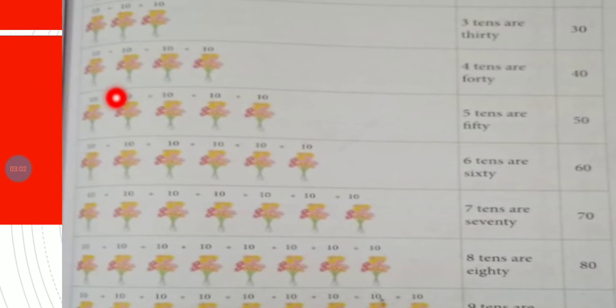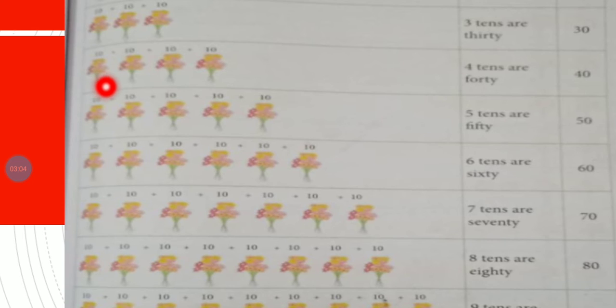There are four bunches of ten flowers, and there are four bunches, so four tens are forty. One, two, three, four, five: five bunches of ten flowers are fifty. One, two, three, four, five, six: six tens are sixty. One, two, three, four, five, six, seven: seven tens are seventy.